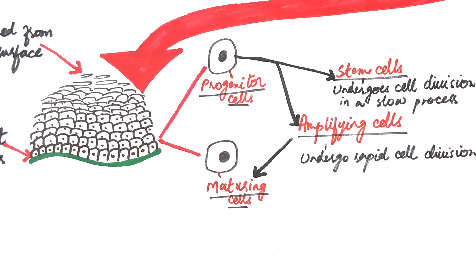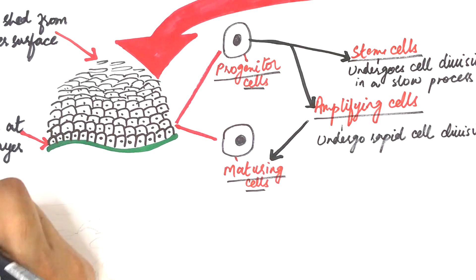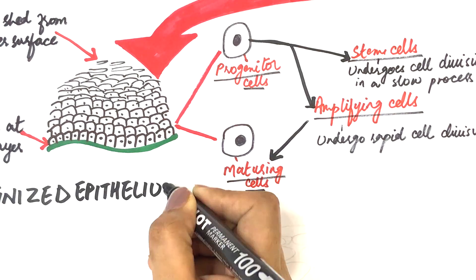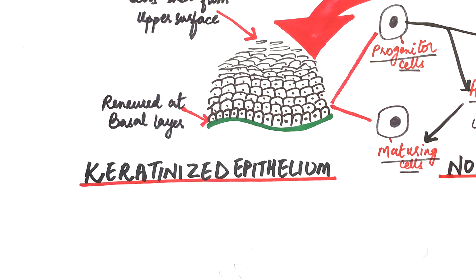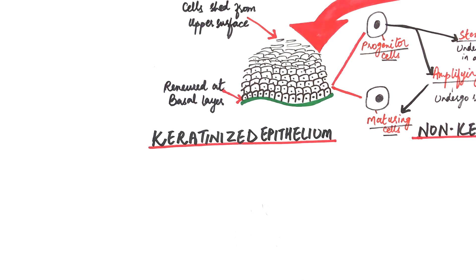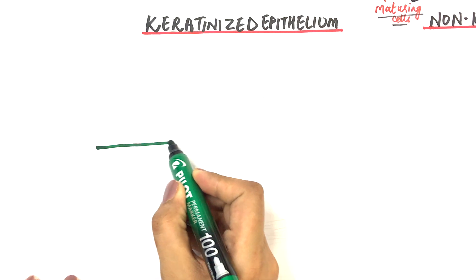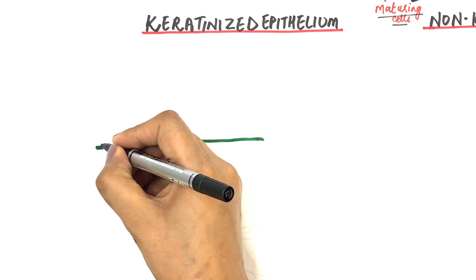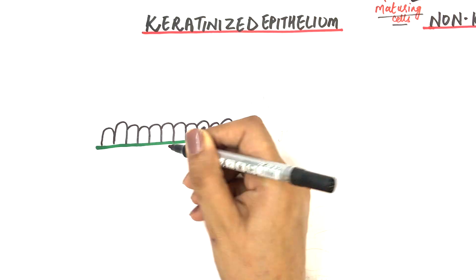Where they mature and form the upper protective layer of the oral epithelium. Based on this maturation process, oral epithelium is divided into the keratinized and non-keratinized epithelium. In the keratinized epithelium, the lowermost layer is the basal layer, known as the stratum basalis.